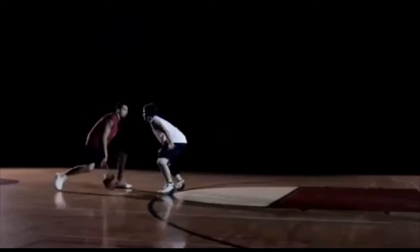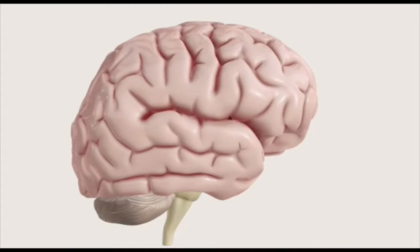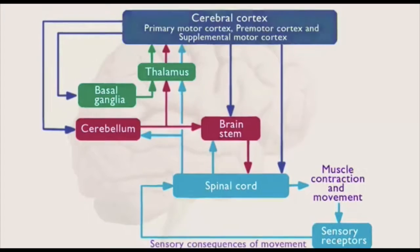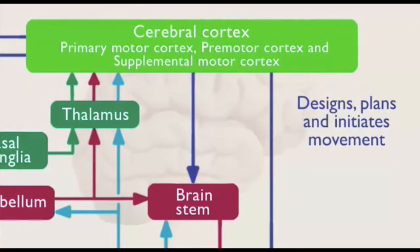When you play basketball or any kind of complex physical activity that involves movement and decision-making, several different parts of your brain are working simultaneously to produce normal movement. The nervous system controls complex motor movements, such as shooting a free throw or diving for a loose ball, in a hierarchical, top-down fashion. This means that the cortex, which is at the highest level, designs, plans, and initiates movement.